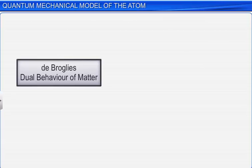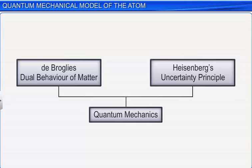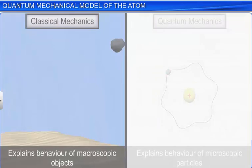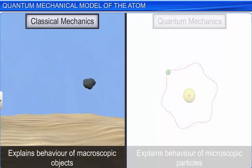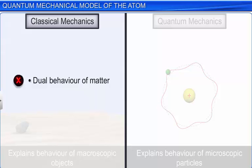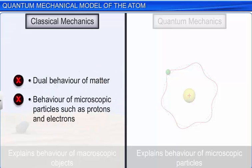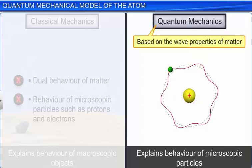De Broglie's dual behavior of matter and Heisenberg's uncertainty principle gave birth to a completely new branch of science called quantum mechanics. Classical mechanics successfully explains the behavior of macroscopic objects, such as a falling stone, on the basis of particle nature. It ignores the concept of the dual behavior of matter and thus fails to explain the behavior of microscopic particles, such as protons, electrons, and so on. On the other hand, as quantum mechanics is based on the wave properties of matter, it describes the behavior of microscopic particles in a much better way.